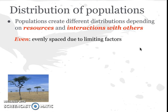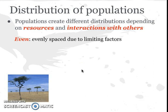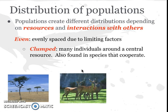To finish up, we want to look at how populations are distributed. Depending on resources and their interactions with biotic and abiotic factors, there are a few different ways species can be distributed. 'Even' is when they're evenly spaced due to limiting factors — for example, trees spaced out evenly to ensure access to sunlight and water. 'Clumped' is when there are many individuals around a central resource; it's also found in species that cooperate with one another, like wolves. Humans often represent clumped distribution because we congregate around cities.